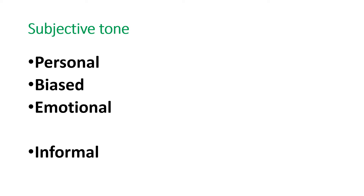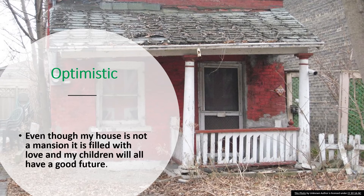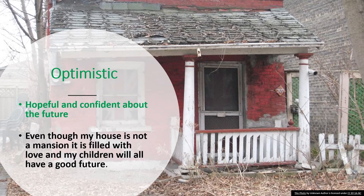Now, other types of tone. We have optimistic: 'Even though my house is not a mansion, it is filled with love and my children will all have a good future.' That's an optimistic tone because it's hopeful and confident about the future.